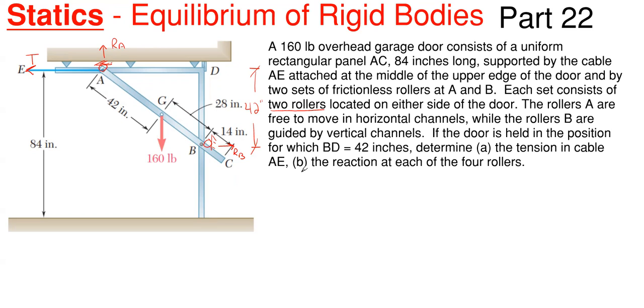So we have to find our tension and our reactions. So since we are going to be in equilibrium here, we have the possibility of using our three equilibrium equations for our 2D problem, which is summing forces in the vertical, summing forces in the horizontal, and then summing moments about a point. And all of those have to be equal to zero for equilibrium to be true.